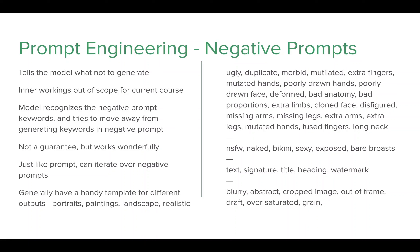Negative prompts are a very effective way to tell the AI model what not to generate. How negative prompts work at the AI model level is out of scope for the current course, but if you are curious, it is related to conditional and unconditional sampling during the diffusion process. The AI model recognizes the keywords in the negative prompt and tries to move away from that region in multidimensional metric space.